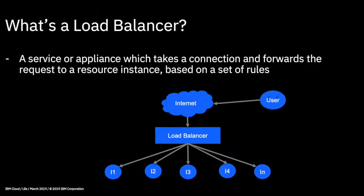Based on some rules — that may be round robin, or it may be a least loaded rule — it will then connect that user to one of the particular server instances. So using this diagram, let's say the user goes to www.ibm.com, it goes through the internet, it hits the load balancer. The load balancer sees that instance four is the least loaded, so it makes the connection to instance four. With round robin, the next user goes to instance one, then instance two, then three, four, five, and back around to instance one again.